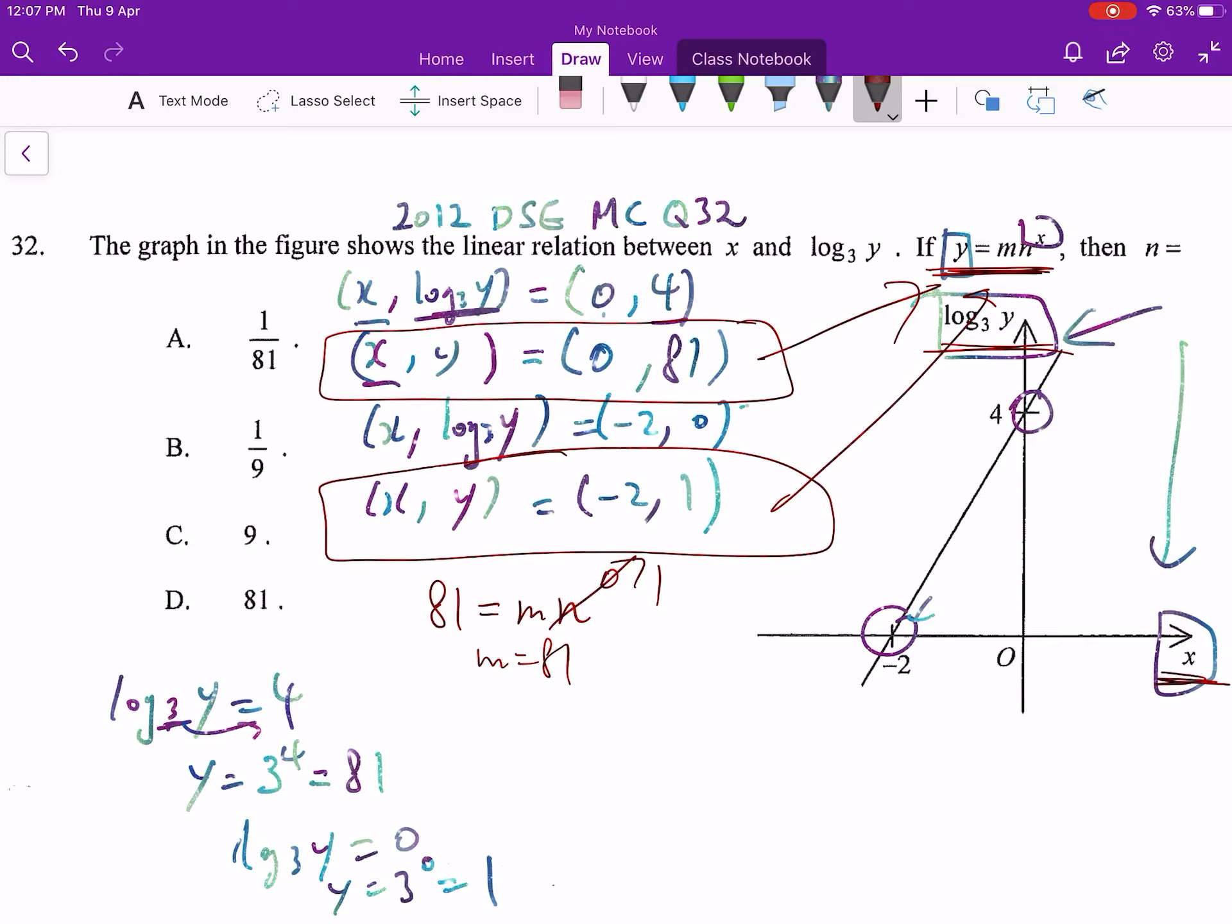How about the second one? When x is -2, y is 1, that means 1 equals m which is 81, and x is -2. So n equals 81 to the negative 1/2 because we have to do the inverse index calculation. That means 81 square root, which is 9. So n is 9.